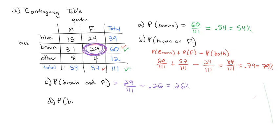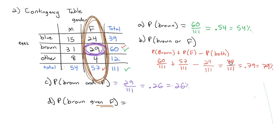Let's do a given: the probability that they have brown eyes given that they are female. The given says nothing else matters except the information given — given female, we only look at the female column. Nobody else exists in the survey. There are 29 with brown eyes out of a total of 57 females, giving us a probability of approximately 0.51, or 51%.